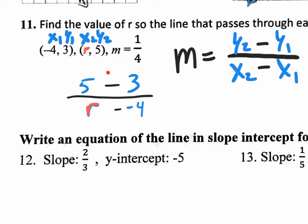Now what is this? This is slope, right? This is the slope formula. The slope formula says m equals, so this whole thing equals m. I could put equals m on either side. Remember that m is really 1/4. So I'm going to set this whole formula equal to the slope, which in this case is 1/4. How do I know that? Because they tell us that m equals 1/4.